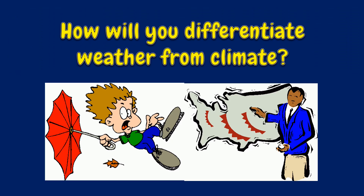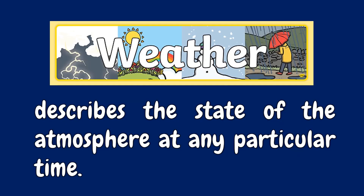How will you differentiate weather from climate? Weather is the state of the atmosphere at a particular place during a short period of time. It involves such atmospheric phenomena as temperature, humidity, precipitation, air pressure, wind, and cloud cover.